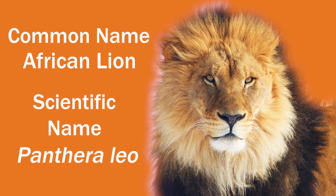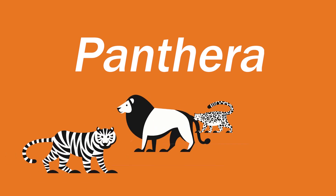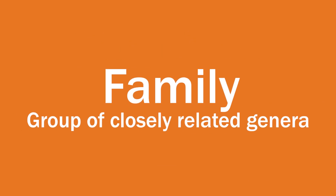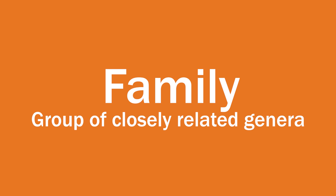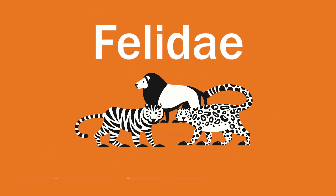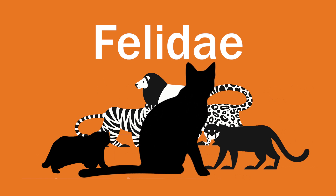A genus is a group of closely related species. The genus Panthera is the group that includes lions, tigers, and snow leopards — the big cats. Then a family is a group of genera that are all together and are again more closely related. The Panthera are in the family Felidae, which includes all of the cats, including your house cat at home.